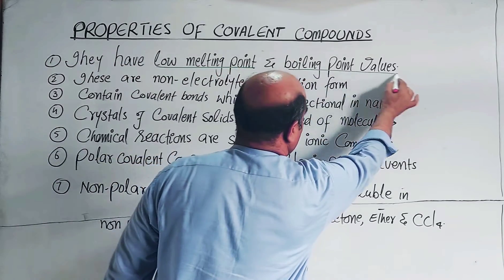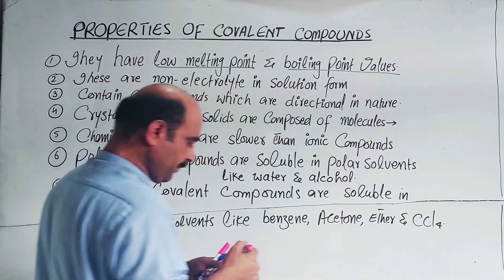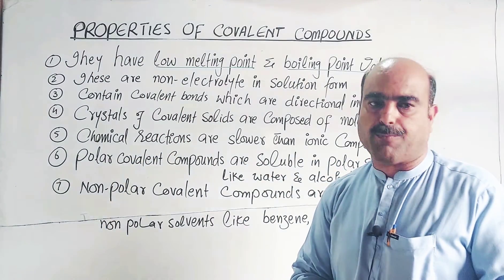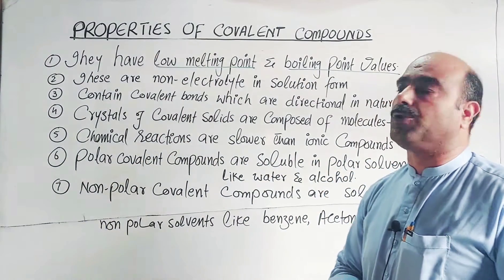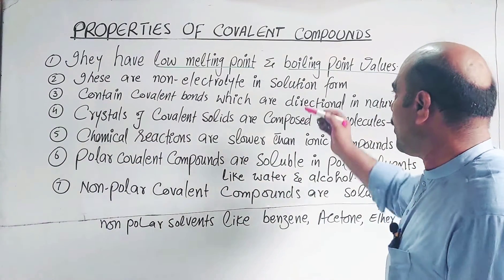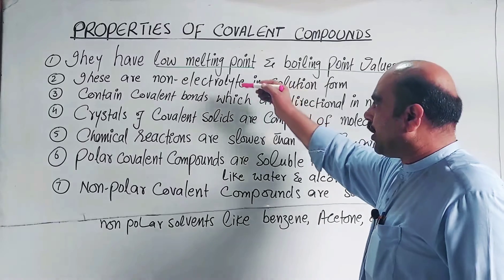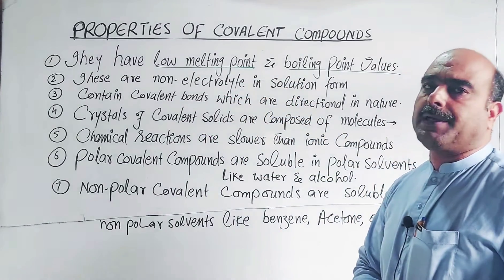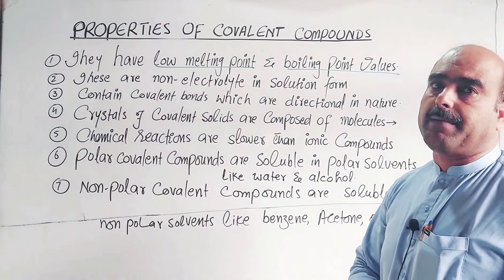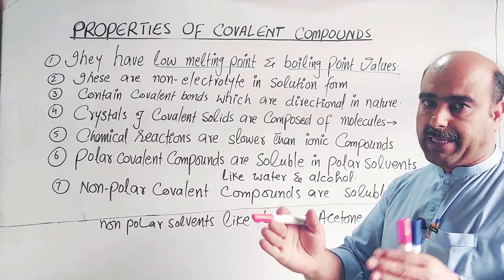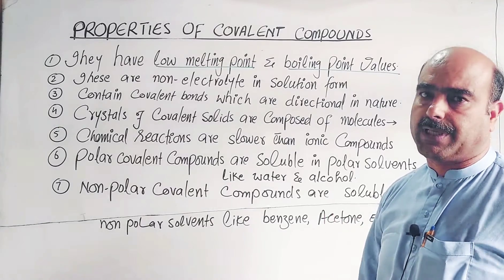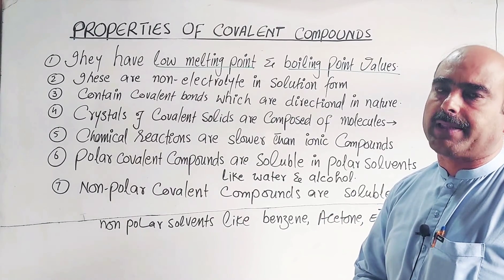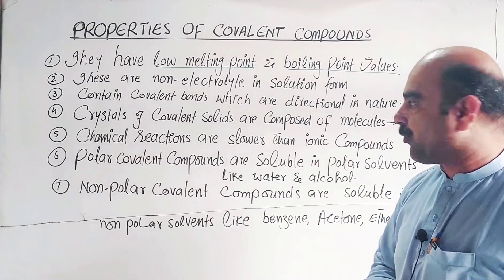The melting point and boiling point values of covalent compounds are low because the molecules have weak attractive forces. These attractive forces are weaker than ionic bonds.